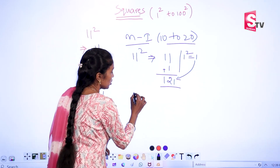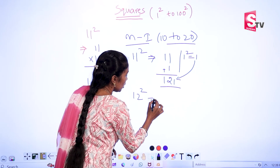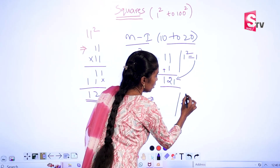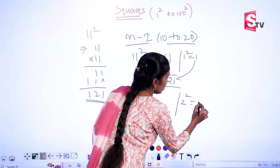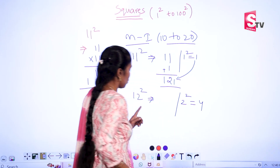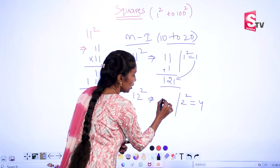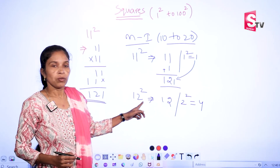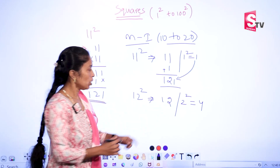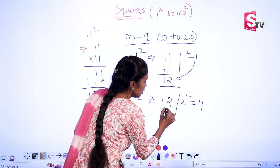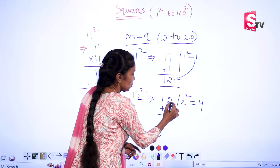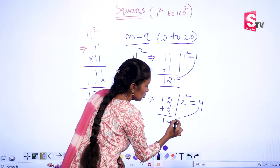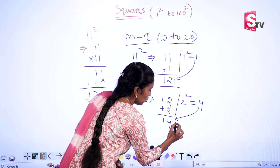See one more example: 12 square. 12 square — the extra digit is 2, and 2 square is separated, so write down 4 here. Write down 12 as it is, then write down this 2. So 14 and write down this 4 here: 144.